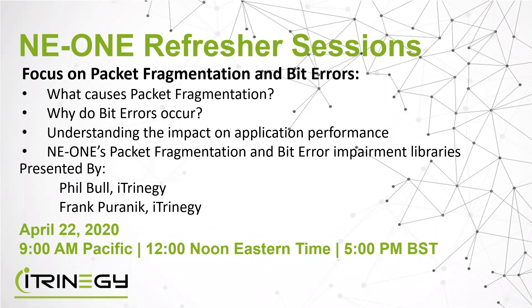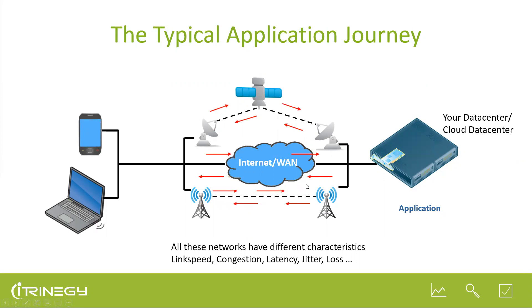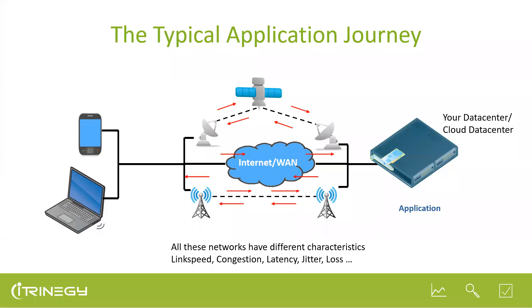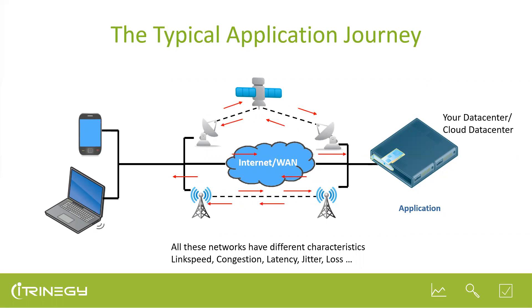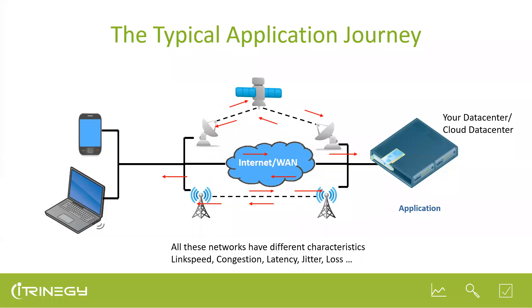We're seeing challenges on wired networks that we thought we wouldn't see — sometimes a wired network behaves like a poor wireless one. This is one of a series of webinars covering two topics: fragmentation and bit error. They're at the more esoteric end of the scale compared to latency, jitter, and loss. The first part recaps some things from previous sessions so this one can stand on its own, though TCP and UDP will be covered in less detail than before.